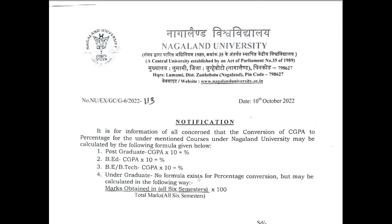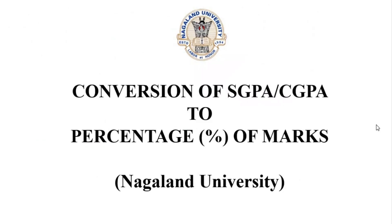Other courses such as BE and BTEC will also follow the same conversion formula. For candidates who come under the 'all course' category, they need to use this calculation: total marks obtained in all 6 semesters divided by the total marks of all semesters, multiplied by 100. That is how you calculate the percentage for your undergraduate program.